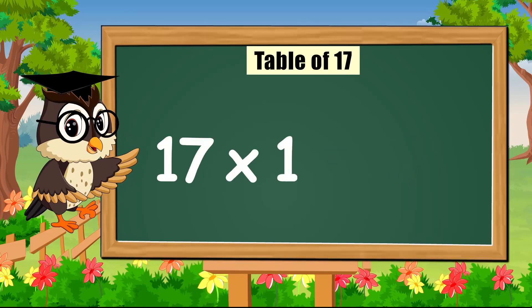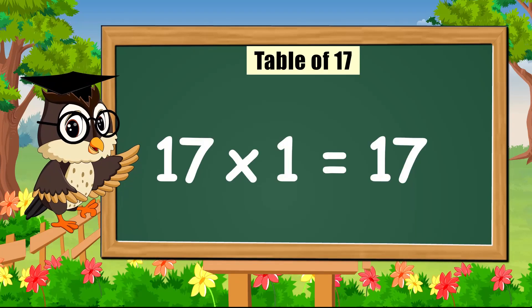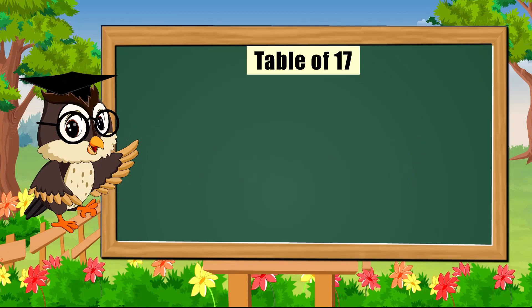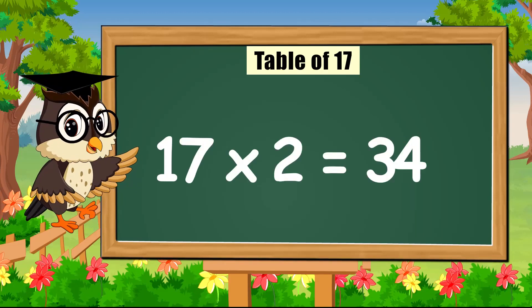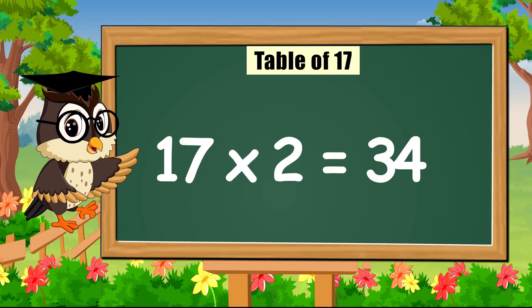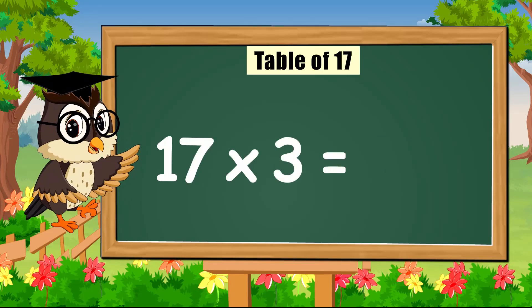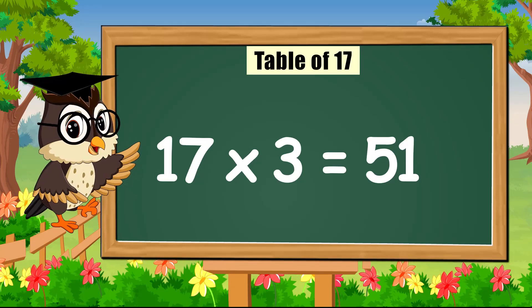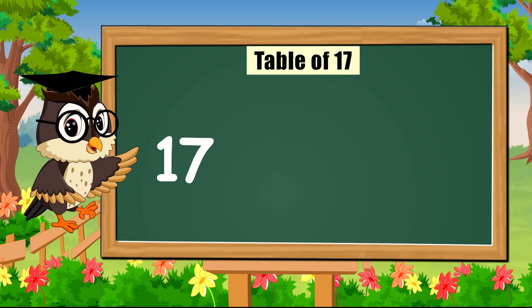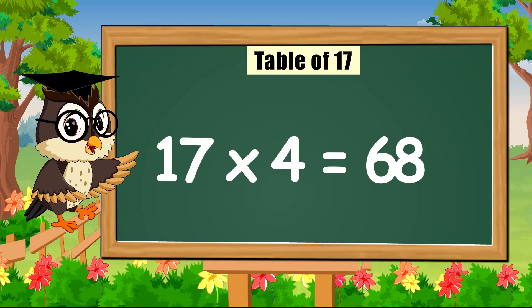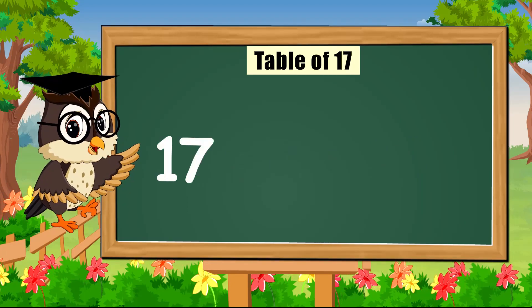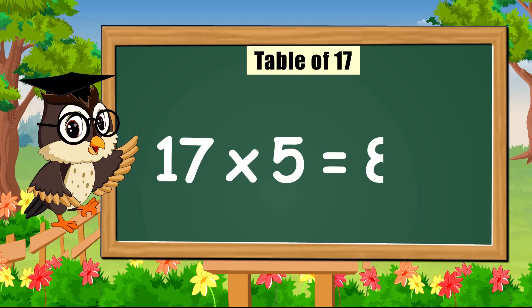17 times 1 is 17. 17 times 2 is 34. 17 times 3 is 51. 17 times 4 is 68. 17 times 5 is 85.